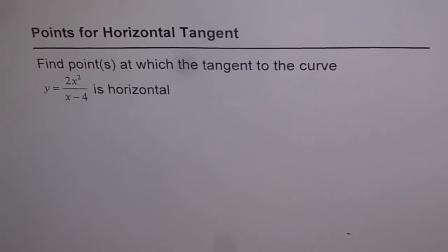Points for horizontal tangent. Find points at which the tangent to the curve y equals 2x squared over x minus 4 is horizontal.